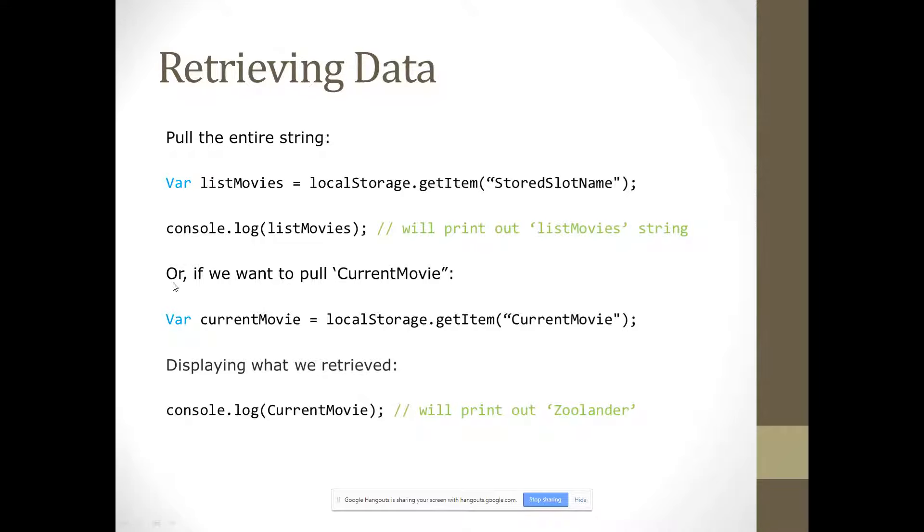And so, if we wanted to print that, console.log list movies, which is this here. So, we'll just print a list. Or, if we wanted to get our current movie, var current movie is localStorage.getItem, and then current movie. Just real simple. And then to display that, console.log will display Zoolander. Does that make sense? Mm-hmm. Okay.